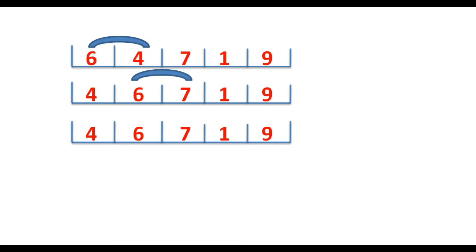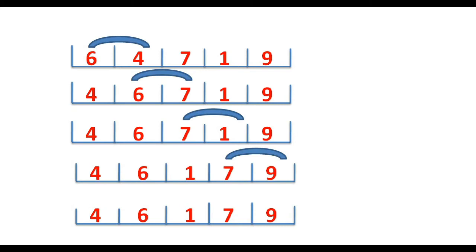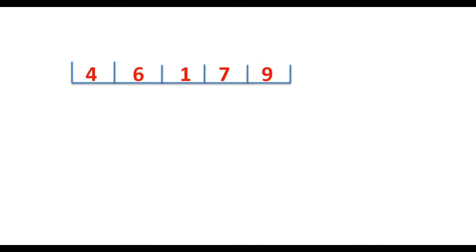In the next pass, 7 and 1 will be compared. Since 1 is smaller than 7, we are going to swap these two elements and the array will be 4, 6, 1, 7, 9. In the last pass of the first round, 7 and 9 will be compared — since 7 is already less than 9, no swapping is going to happen. So at the end of the first round we have 4, 6, 1, 7, 9. We need to perform one more round because the array is still not sorted.